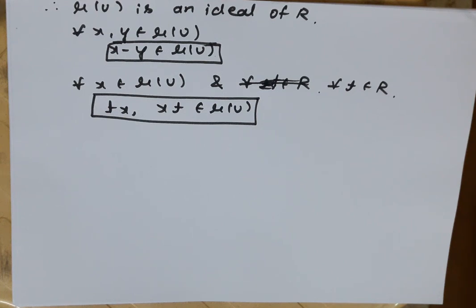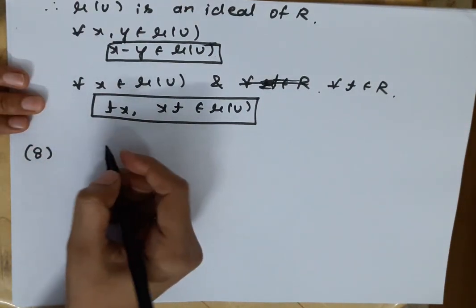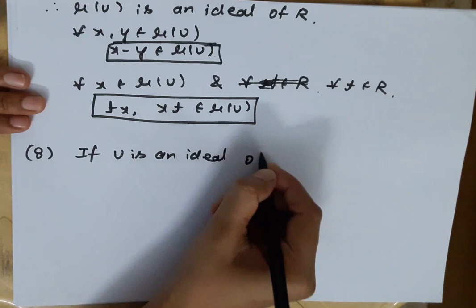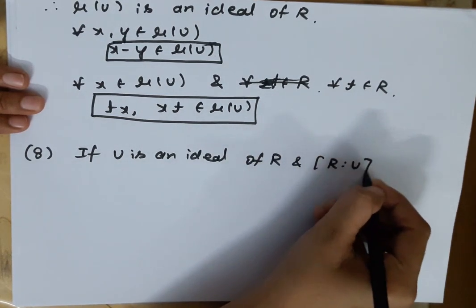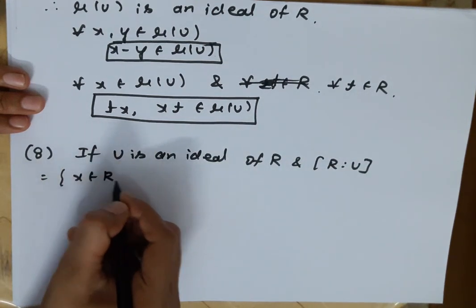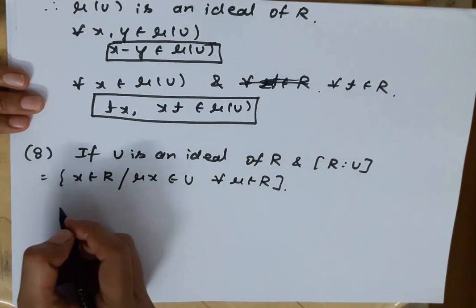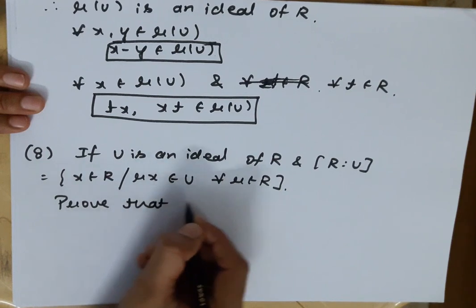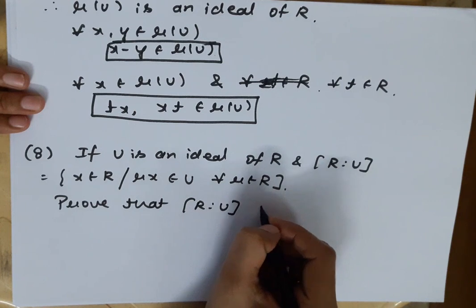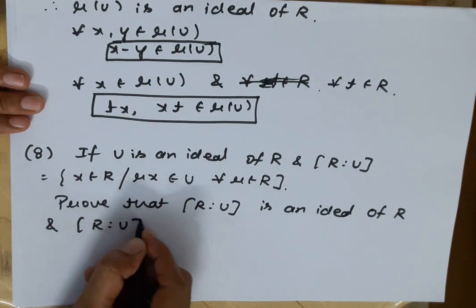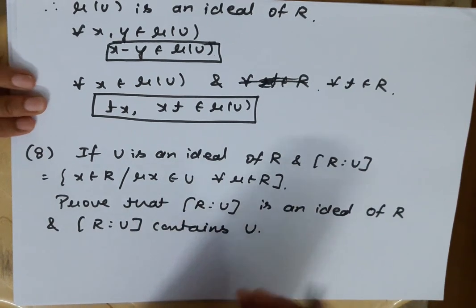We have covered many problems that I have seen in the exam. I have stated several problems here. Question Number 8 is as follows: if U is an ideal of R and R:U = {x ∈ R : r·x ∈ U for all r ∈ R}, prove that R:U is an ideal of R and that U ⊆ R:U.